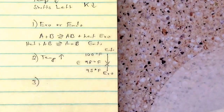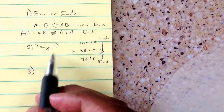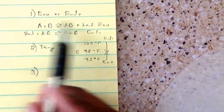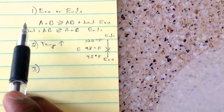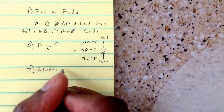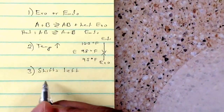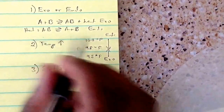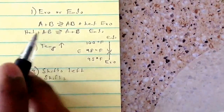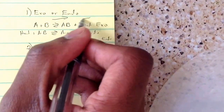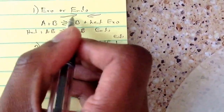The next step is to see which way the equilibrium shifts. Once you figure out which direction is endothermic or exothermic — for example, if endothermic is the reverse reaction and equilibrium is going to the left, then the equilibrium shifts left. If it goes in the forward reaction direction, it shifts to the right.